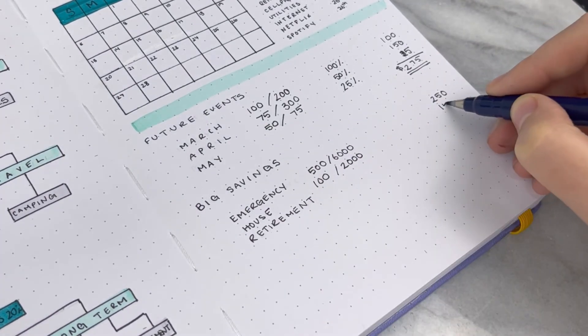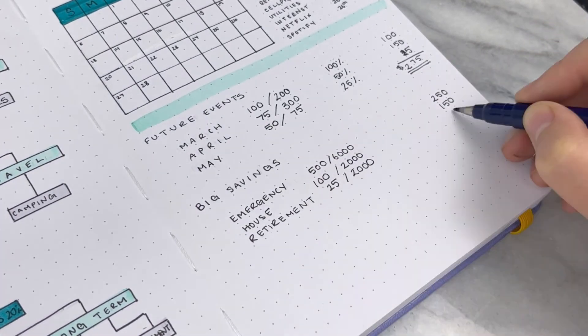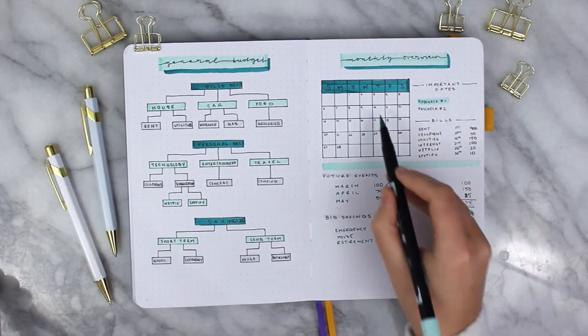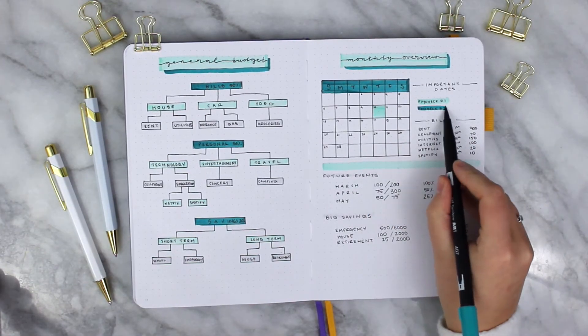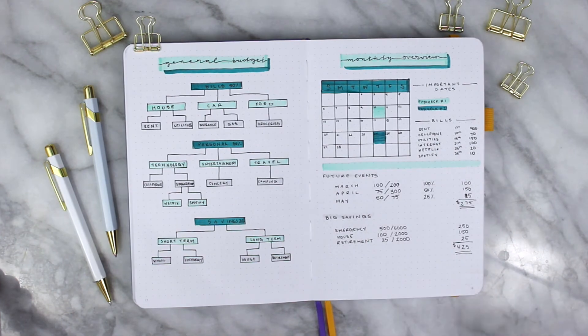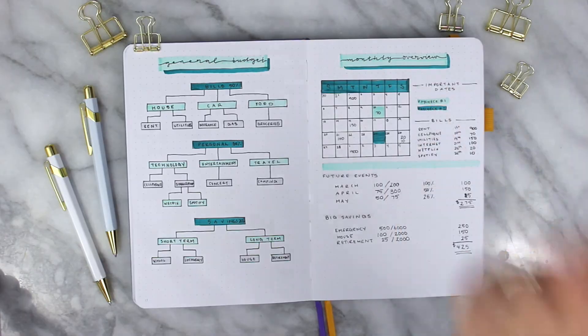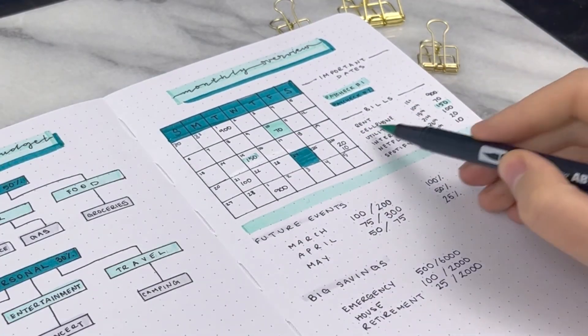Big savings, things like emergency, house, retirement, I'm going to plop in certain money that I want to have happen over the month. Trying to make sure that I target about 20 percent of my income connecting the last general budget spread to this one. I am color coding in the two days that I would then get paid as well as the bills.